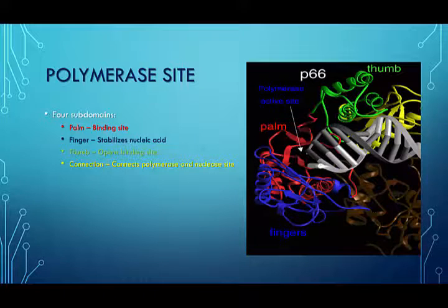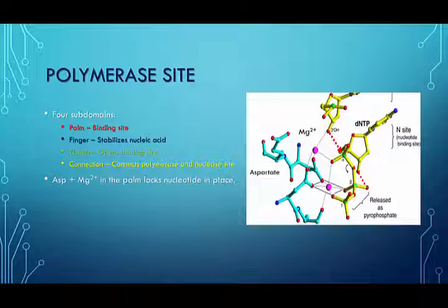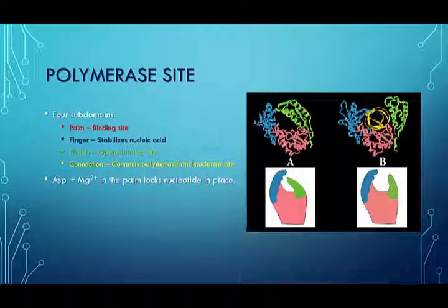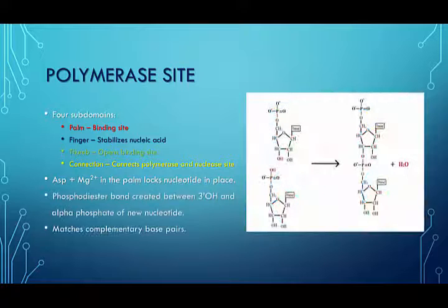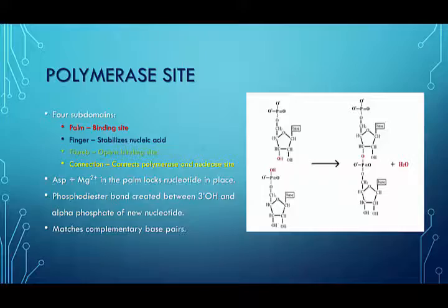Three negatively charged aspartate residues located in the palm subdomain are responsible for binding two divalent atoms, which can be either magnesium or manganese. These positively charged atoms form favorable interactions with phosphate groups, helping to stabilize the incoming nucleotides. When an incoming DNA nucleotide approaches the enzyme, the thumb subdomain undergoes a conformational change and opens to allow the dNTP to rest within the polymerase site. Once it is in the binding site, both the finger and thumb subdomains close, holding the nucleic acid in place. This aligns the two adjacent nucleotides, creating a phosphodiester bond. Once this bond has been formed, the two subdomains open, allowing pyrophosphate to be released.